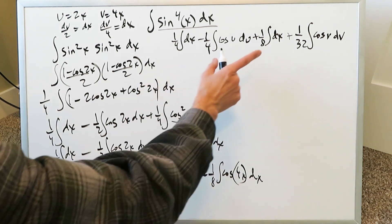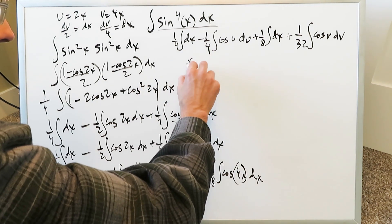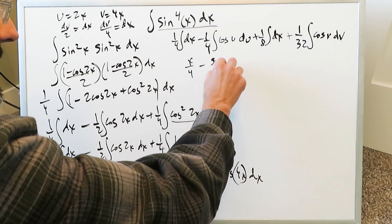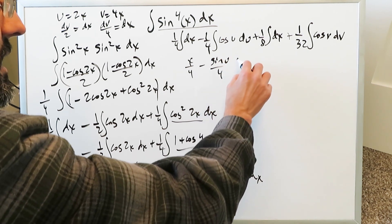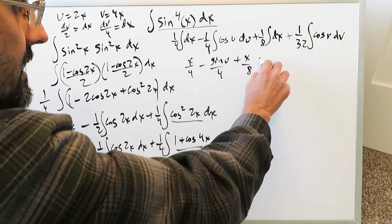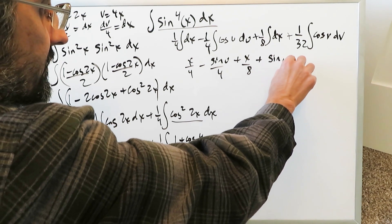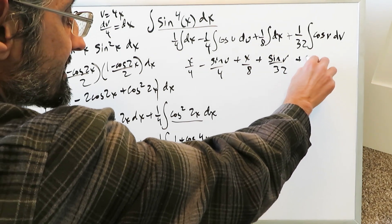Now let's integrate in terms of getting the antiderivatives. Here we have an x over 4. Here we have a sine u over 4. Here we have an x over 8. Here we have a sine v over 32 plus c.